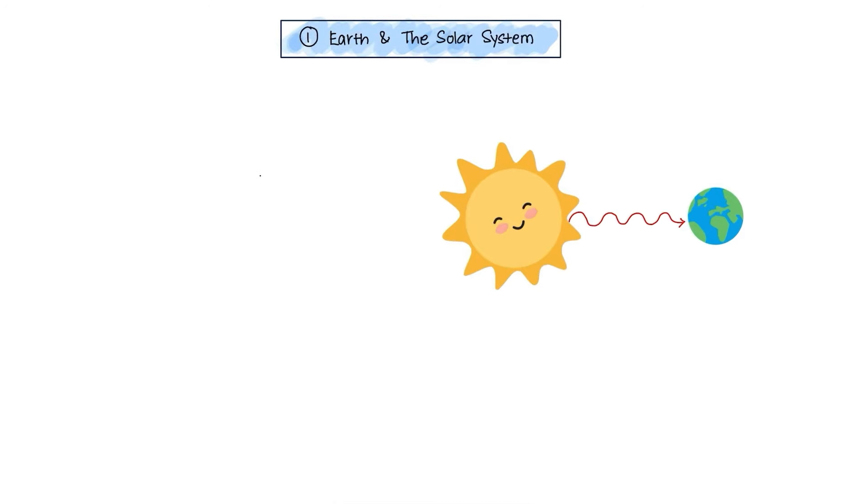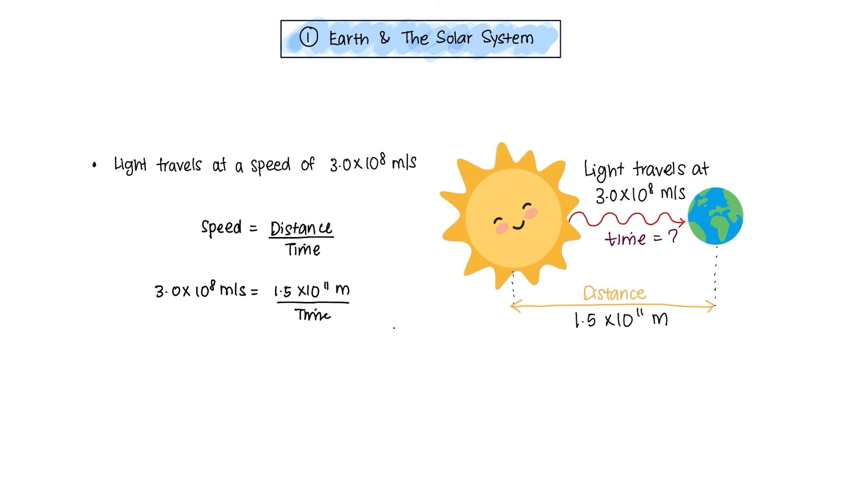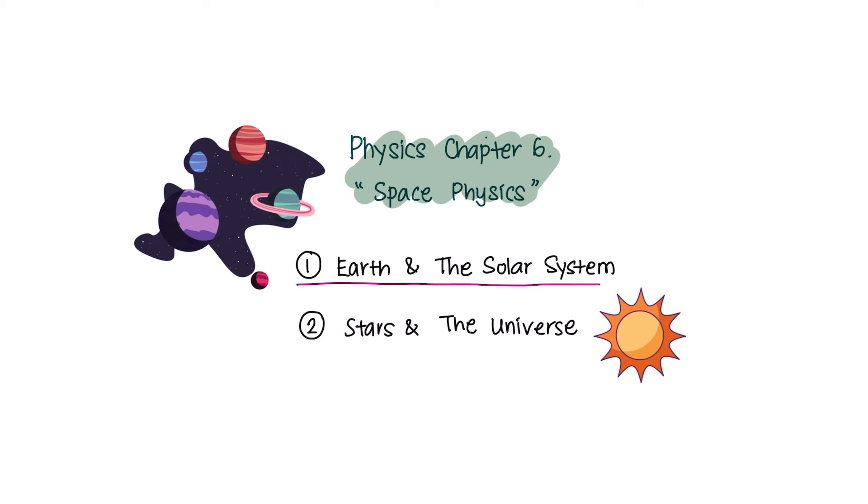Okay, since the Sun emits light and is significantly far away from the Earth, how long does it take for the light to reach the Earth? Given that speed equals distance over time, we can simply calculate the time by substituting the distance, which is 1.5 × 10^11 meters, and the speed of light being 3 × 10^8 meters per second. Please remember these values and the units correctly. Now, you will obtain a value of 500 seconds, which converted to minutes would be 8.3. That's the end for 6.1 Earth and Solar System.